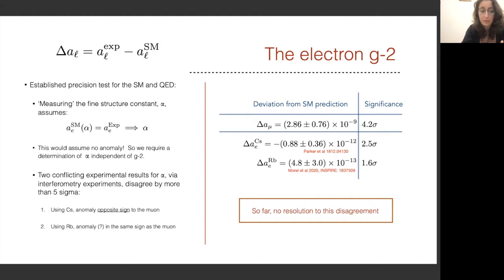At the moment there are two conflicting experimental results for alpha, which are achieved using different interferometry experiments, and unfortunately these two results disagree by more than five sigma. The first is using cesium, and the second using rubidium. The cesium measurement leads to a 2.5 sigma anomaly in the g minus 2 of the electron, and the direction of this deviation is in the opposite sign to that of the muon. If instead we look at the rubidium result, this corresponds to a deviation of 1.6 sigma, which many may argue is not exactly an anomaly.